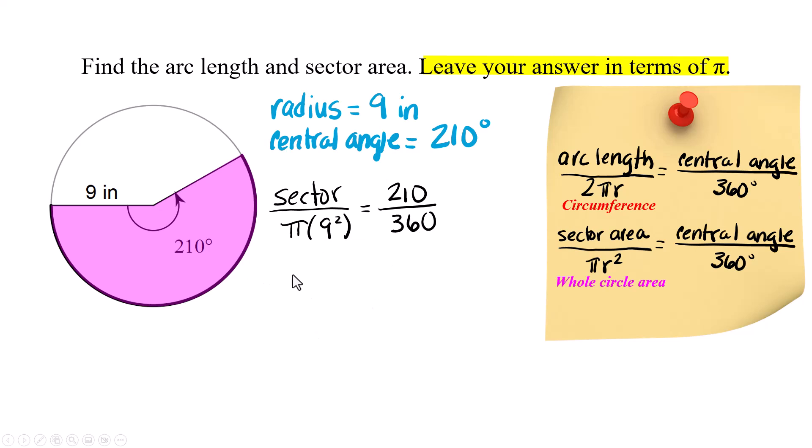So I'm going to have sector over 81π because 9 squared is 81 and then 210 and 360 reduce to 7 over 12. Now I'm going to cross multiply 12. Most people put an x or something for sector.